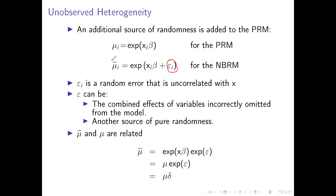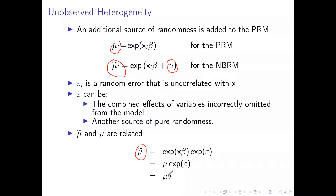This mu-tilda and mu-i are related. Mu-i here is equal to mu-tilda, which is equal to mu multiplied by delta. And mu-tilda is equal to the product of mu and delta.